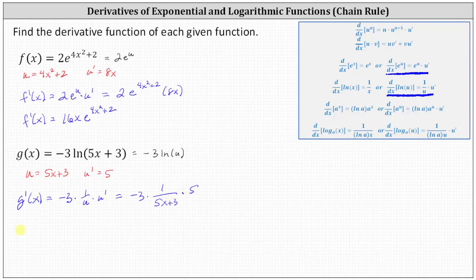Let's go ahead and simplify. g prime of x equals negative three times five is negative 15, giving us negative 15 divided by the sum of five x and three. I hope you found this helpful.